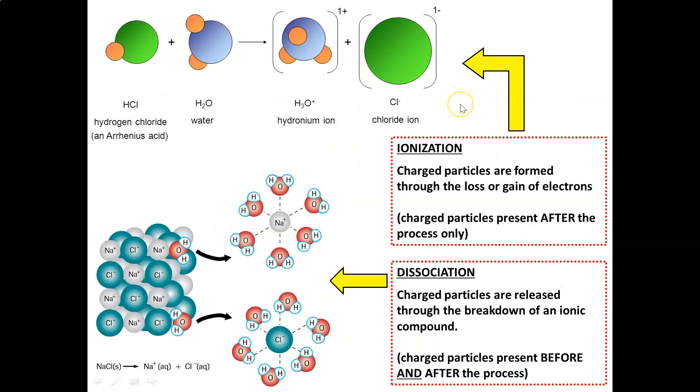One other thing I want to draw your attention to before we move ahead are these two terms: ionization versus dissociation. In both cases, charged ions are released, and so that's why sometimes they are used interchangeably, but that's not correct. When it comes to ionization, they were not charged particles before. For instance, hydrogen chloride, an Arrhenius acid, and water may be polar but they're definitely not charged. But through the process of ionization, where loss or gain of electrons occurs, you create charged ions afterwards.